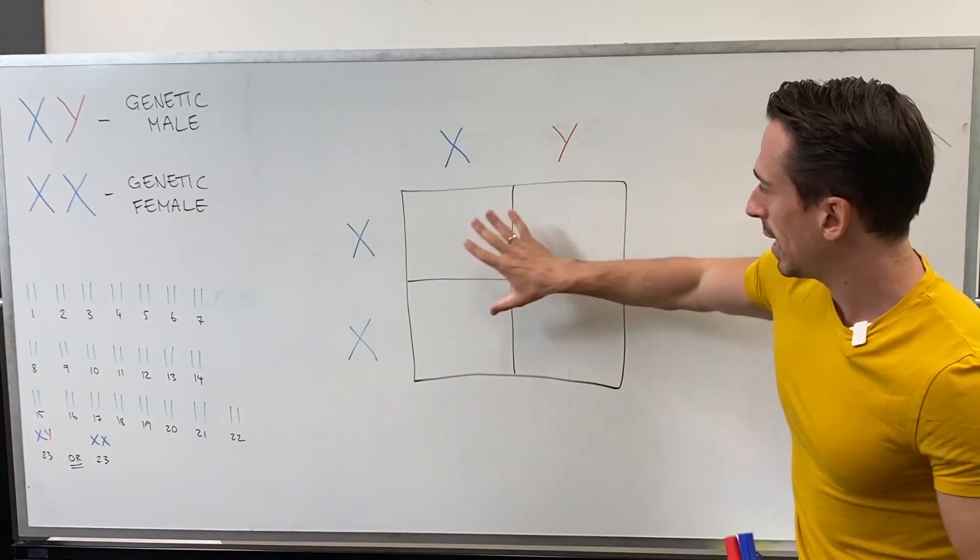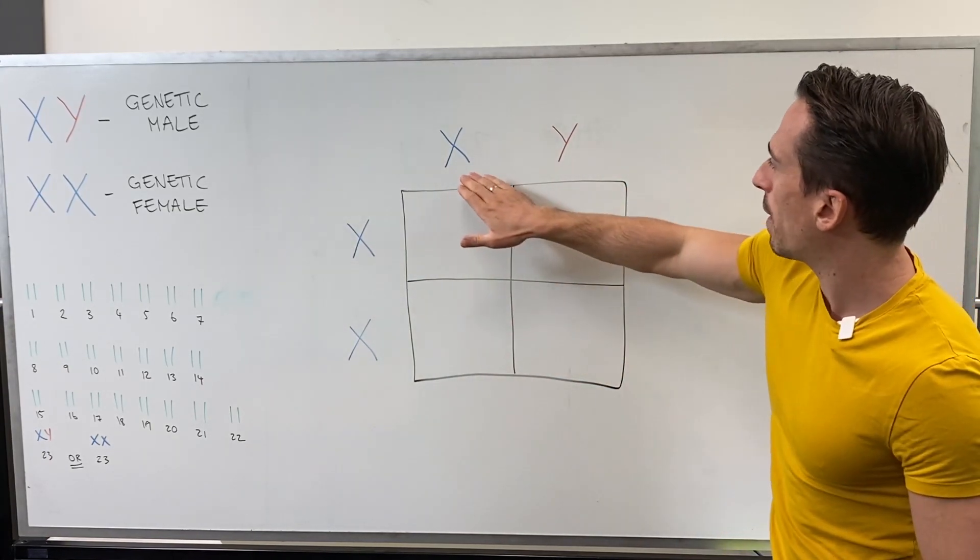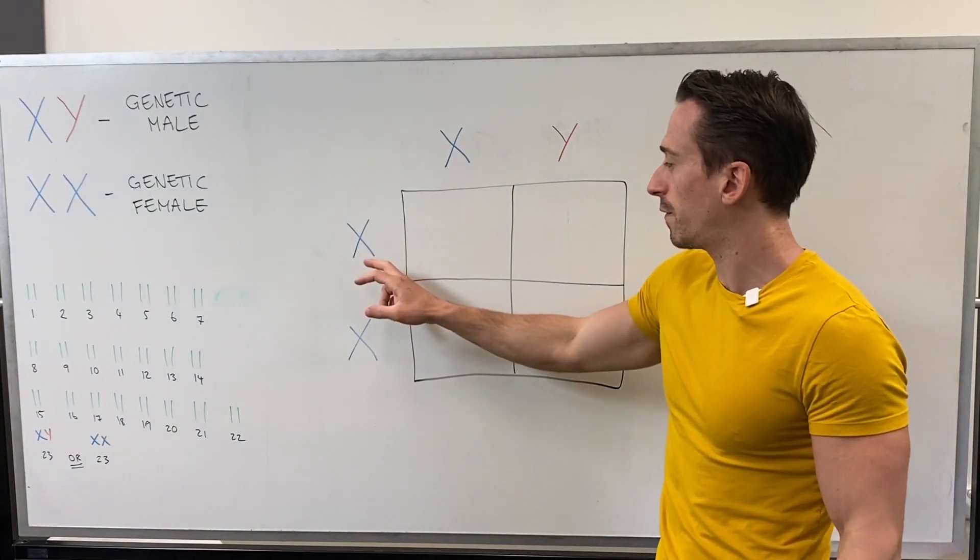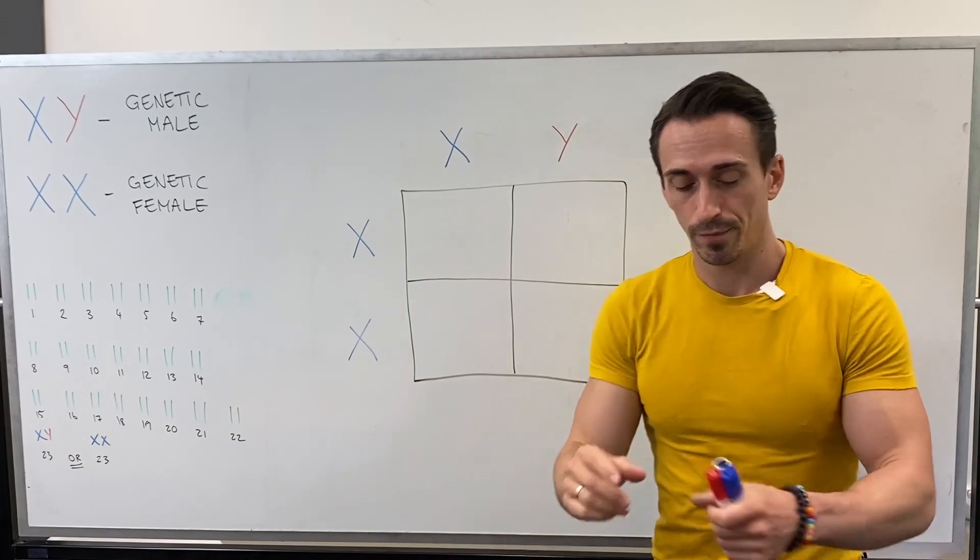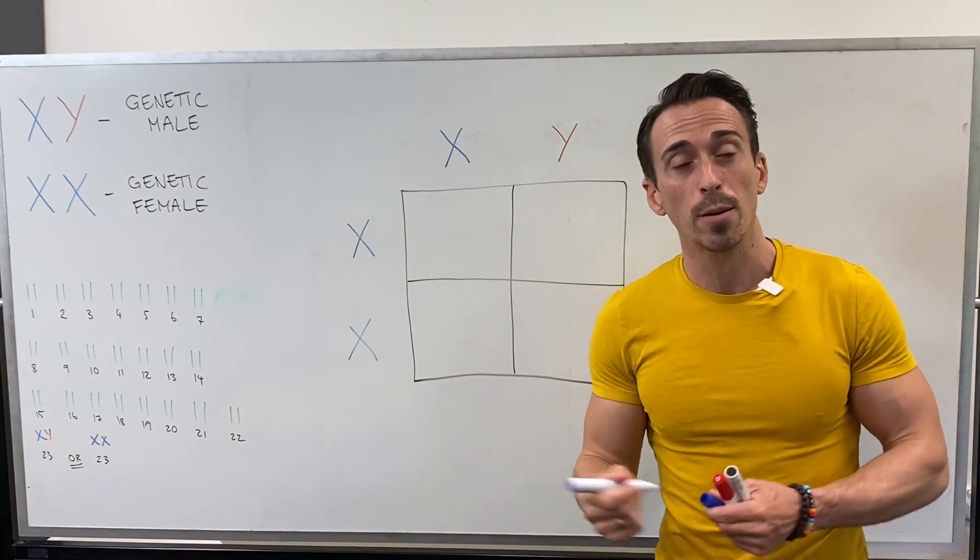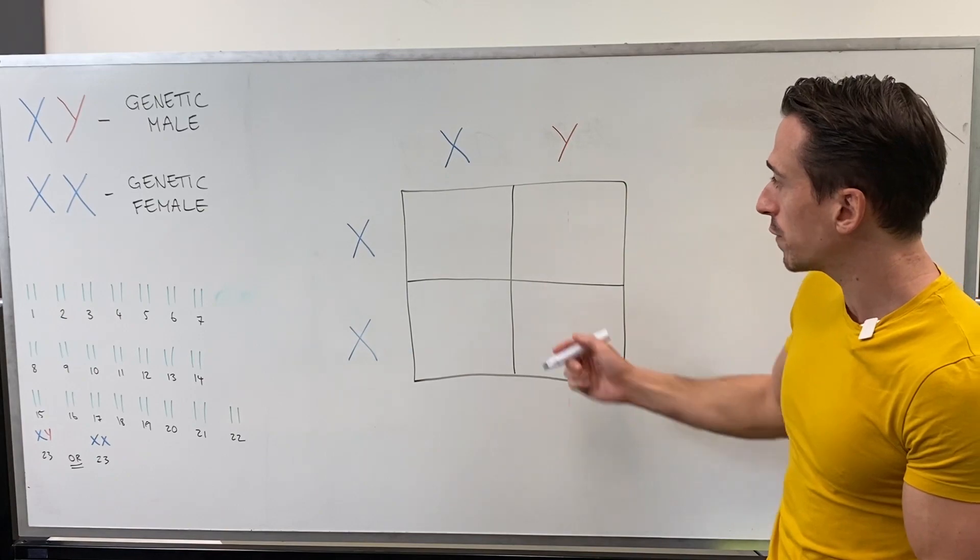So let's think about it like this. Here's our Punnett square, here's the genetic male XY, here's the genetic female XX. Now, if they want to have offspring, what's the likelihood of them having a genetic male and a genetic female offspring?